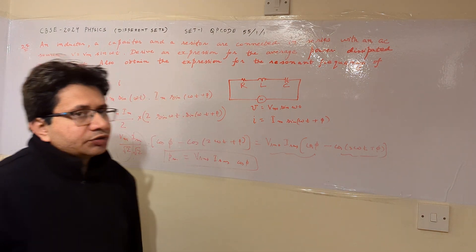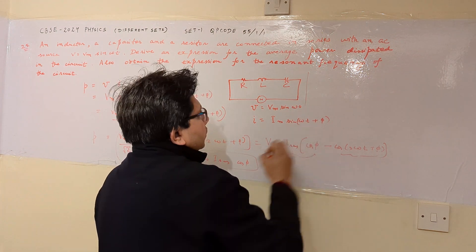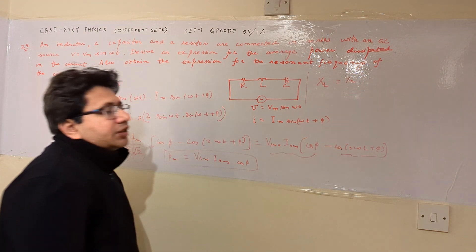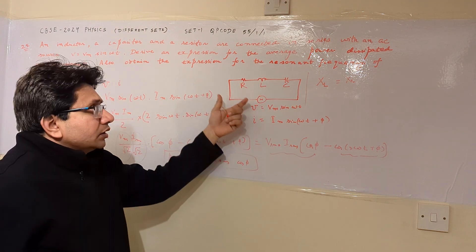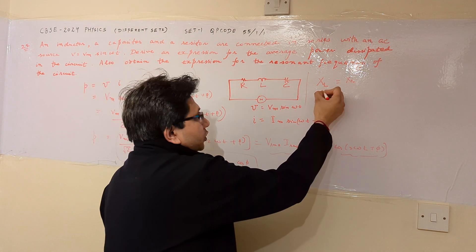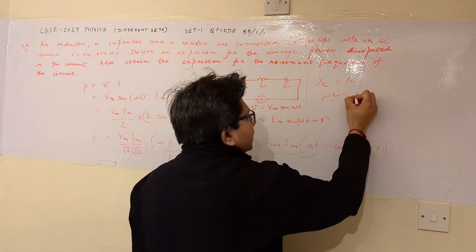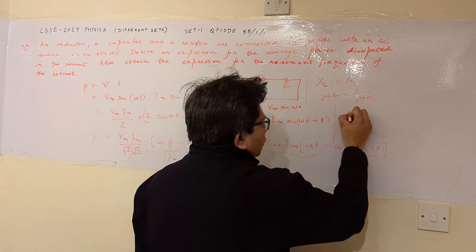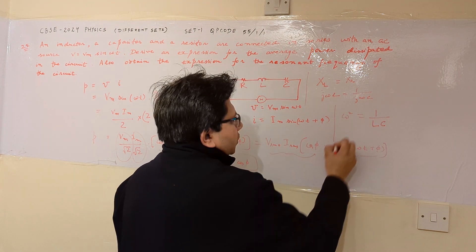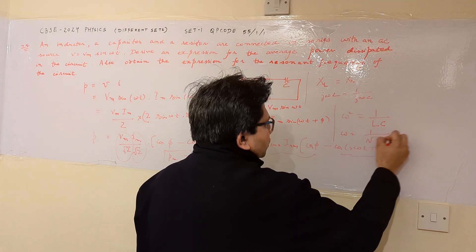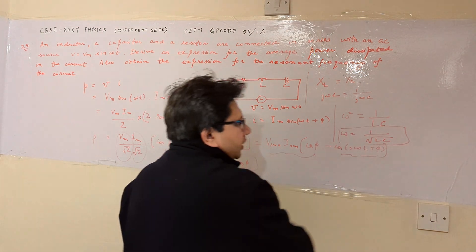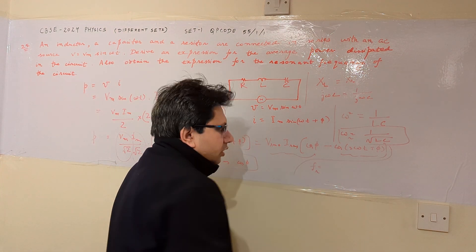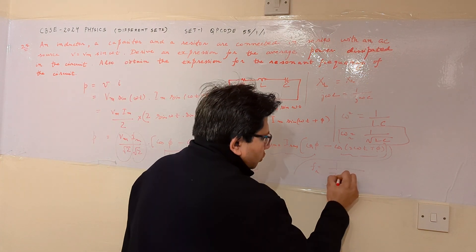For the second part, we need to find the resonant frequency. At resonance, the inductive reactance equals the capacitive reactance, and the total impedance is purely resistive. So we set XL = XC, that is jωL = 1/(jωC). Solving this gives ω² = 1/(LC), or ω = 1/√(LC). This is the resonant frequency in radians per second. In terms of hertz, the resonant frequency is f = 1/(2π√(LC)).